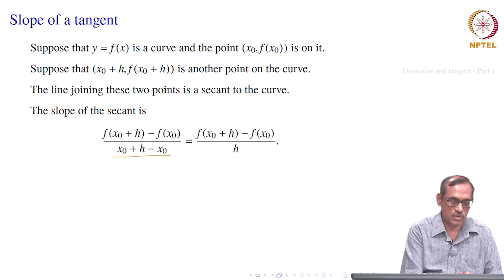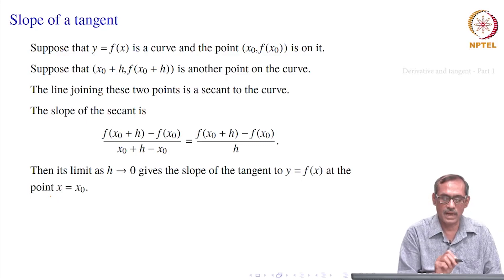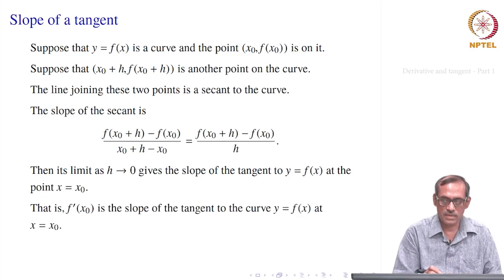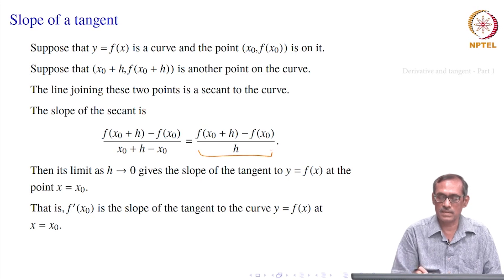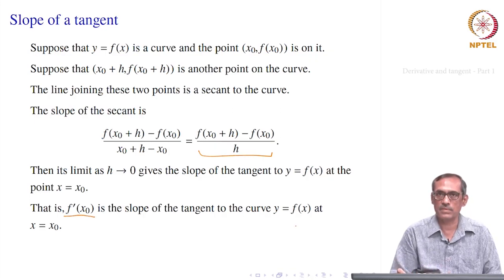Our aim is that when h goes to 0, this limit will be the slope of the tangent to y = f(x) at x = x₀. This is exactly the definition of the derivative — the right-hand side as h → 0 is the derivative at x₀. Therefore, f'(x₀) is the slope of the tangent to the curve y = f(x) at x = x₀.